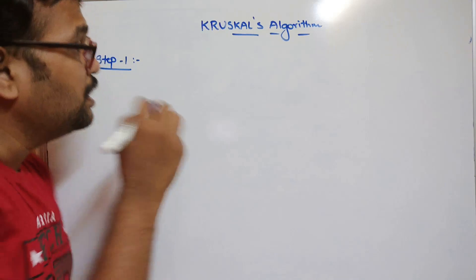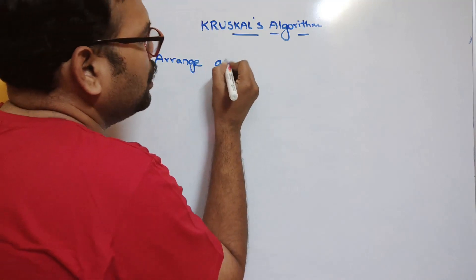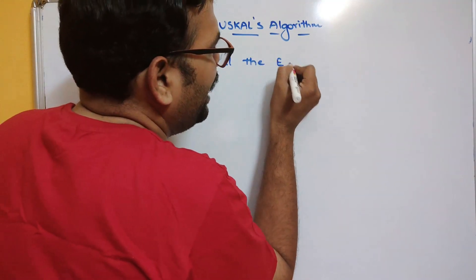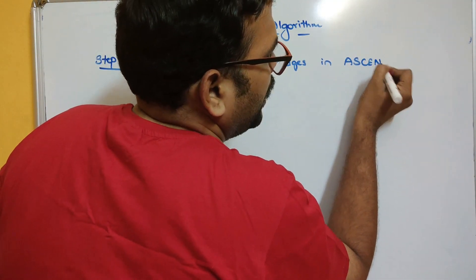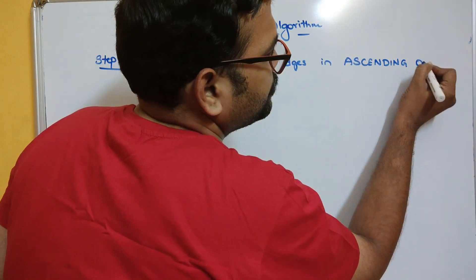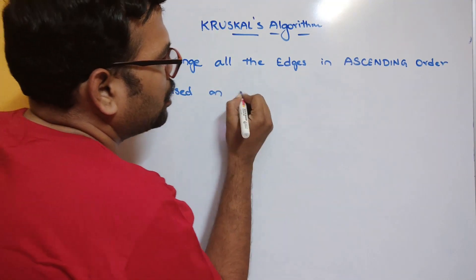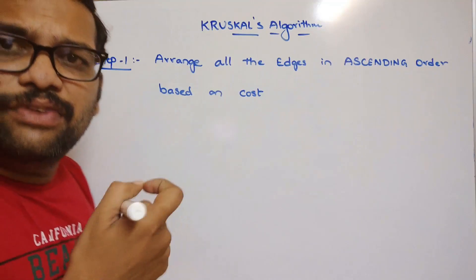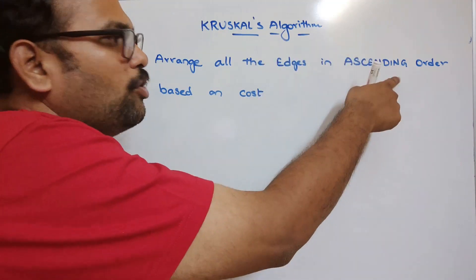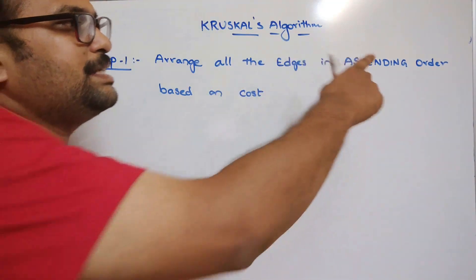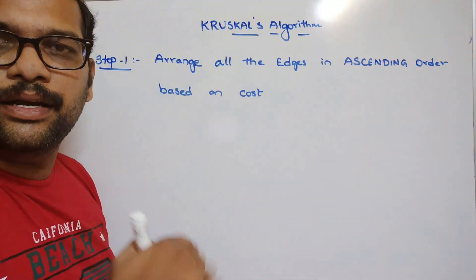Step one: arrange all the edges in ascending order based on cost. Every edge has its own cost, so we need to arrange all the edges from lower value to higher value. We are using ascending order because we need to find the minimum cost spanning tree.